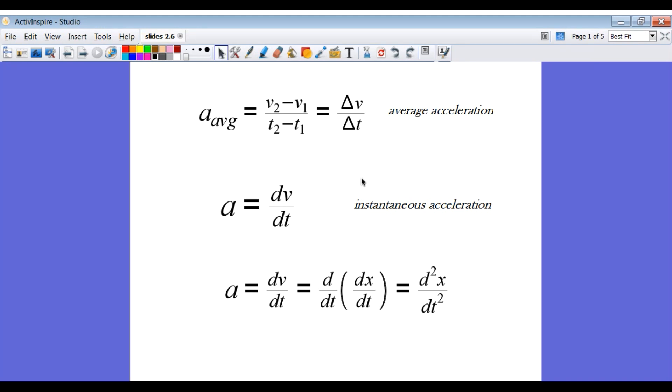And again, just like we did with velocity, if you let that time interval shrink to zero, in other words take the derivative, acceleration is the derivative of velocity with respect to time. And since velocity was the derivative of position, we can say that acceleration is the second derivative of the position as a function of time graph.